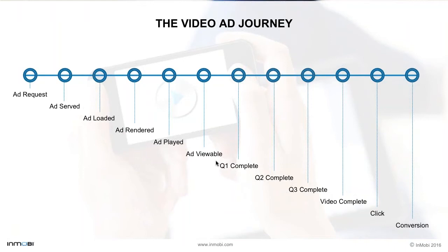As the video progresses, it will mark different quartiles as complete. When 25% of the video has completed, it is Q1 complete; 50% is Q2 complete; 75% is Q3; and 100% is Q4 or video complete. Some networks also offer CPCV — cost per completed view billing — in which case the advertiser is only billed for impressions which resulted in a completed view. For brand advertisers looking for brand awareness, these are the key metrics. For performance advertisers looking for engagement, CTR and CVR — driven by clicks and conversions — are what matter.